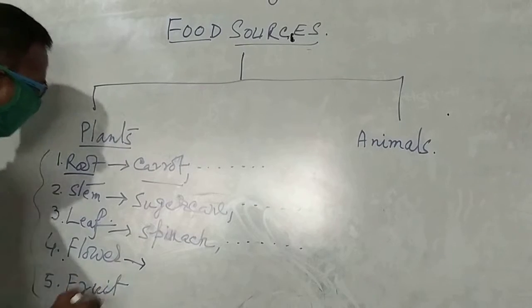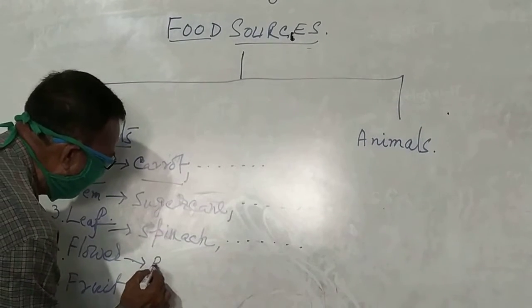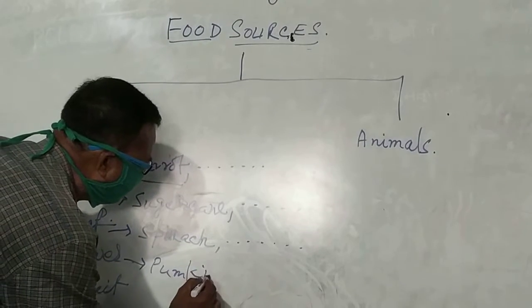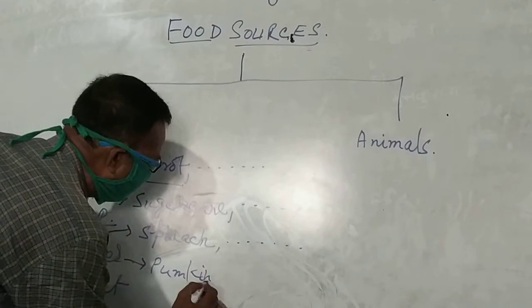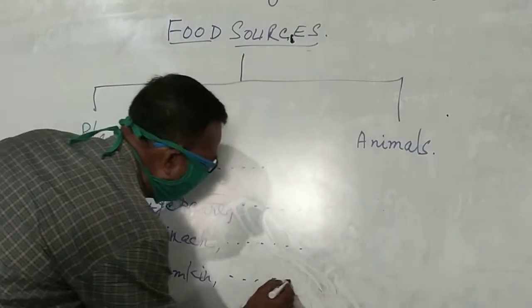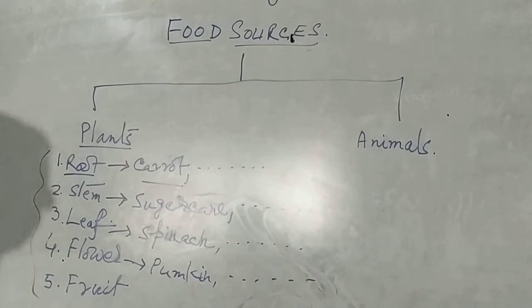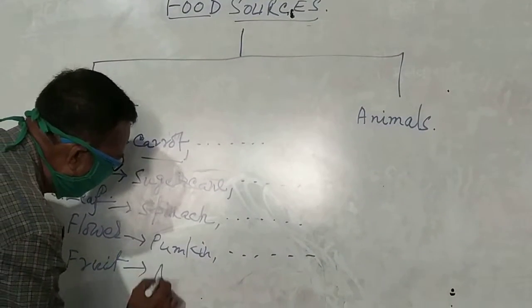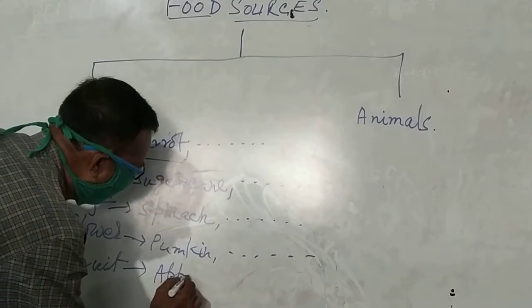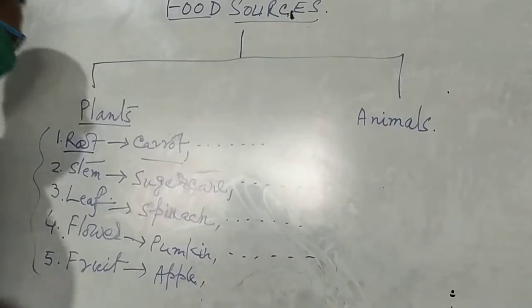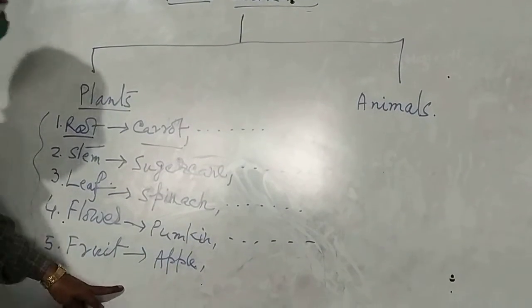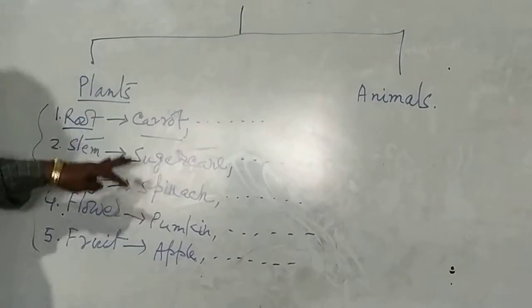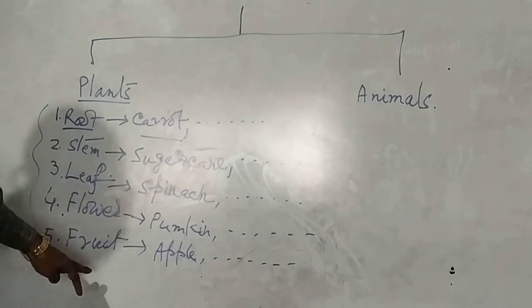Flower part is pumpkin flower. Another flower part is filled up by you. Fruit. Apple. All you like to take as a fruit of apple, another will be filled by you in your copy.